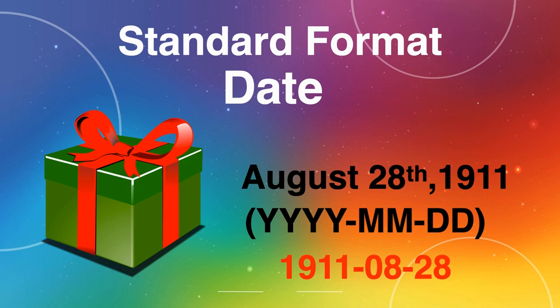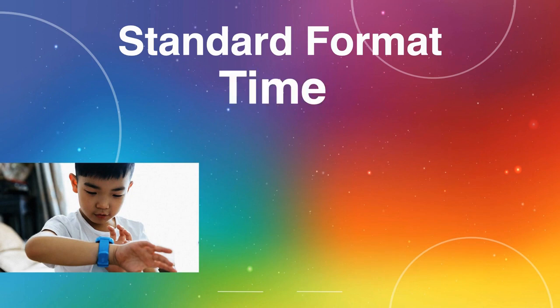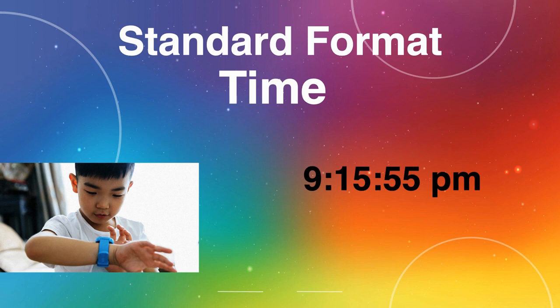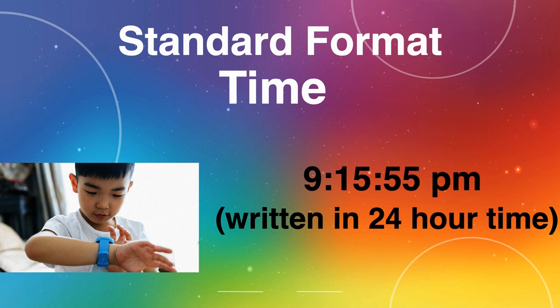We can use standard format for time as well. How do we do that? Pay close attention to these examples. Let's look at our first example. Suppose I'm given the time 9:15 and 55 seconds PM. We know that PM means that it's in the night time. In standard format, we write our time in 24-hour clock time. That means we need to figure out what the hour 9 is on the 24-hour clock.